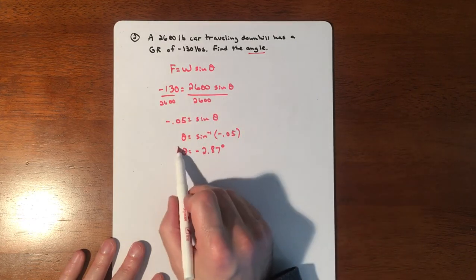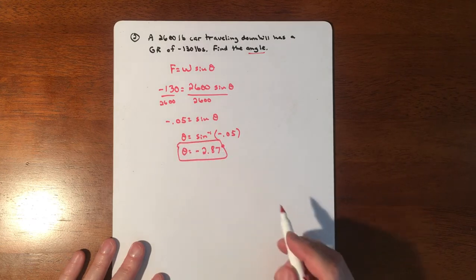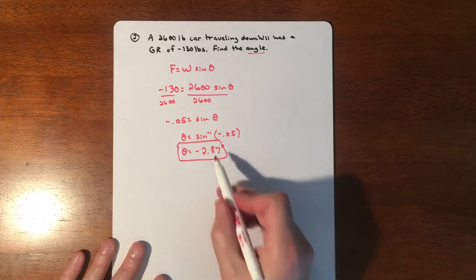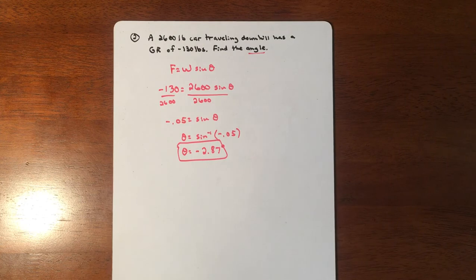That's good. We have a negative angle because we had a negative force, and that is supposed to happen that way. If we have a positive angle, we should have a positive force. That's a very brief introduction to some physics called grade resistance. Thanks.